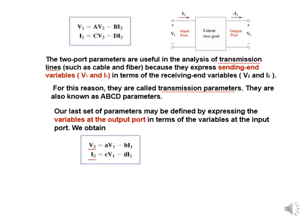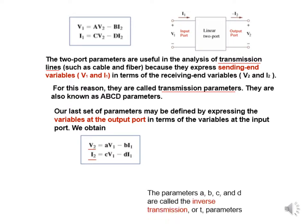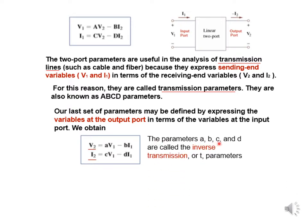It is also possible that instead of finding V1 and I1 in terms of V2 and I2, we can find the output parameters V2 and I2 in terms of input parameters V1 and I1. Just to distinguish the two, we use small a, small b, small c, small d as the parameters. These are called the inverse transmission parameters or small-t parameters.